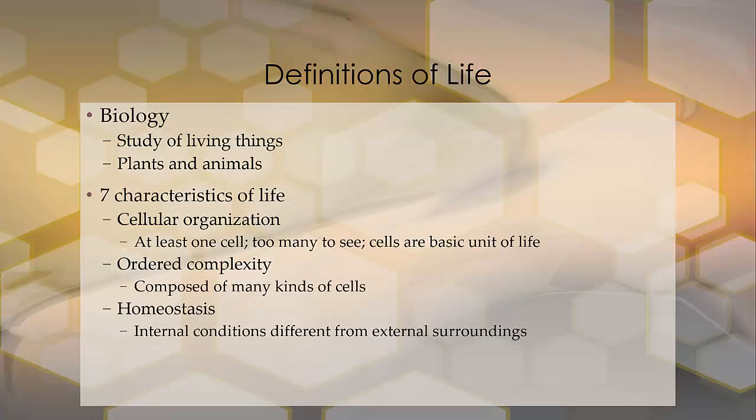We classify living things by seven characteristics. The first three are cellular organization, order of complexity, and homeostasis.